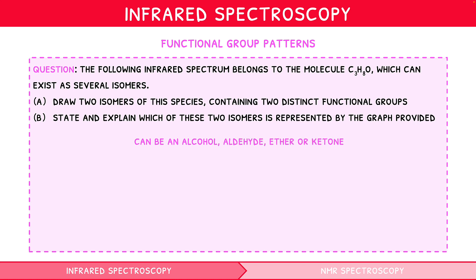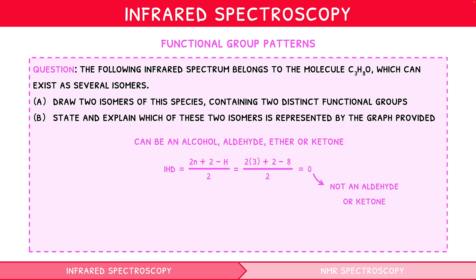To help differentiate, we can calculate the IHD. Using our formula, (2N + 2 − H) / 2, we substitute in N = 3 and H = 8, giving an IHD of 0. Therefore this molecule contains no double bonds, and so cannot be an aldehyde or ketone. To answer the question, let's draw two potential isomers of this three-carbon chain — one alcohol and one ether. These could be propan-1-ol and methoxyethane, but others are possible.